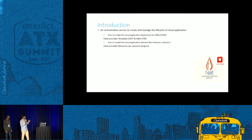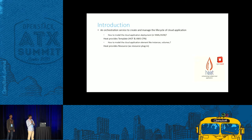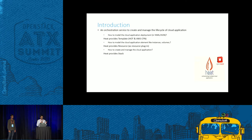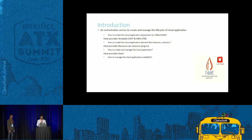If you take a cloud application, it's made of different resources. To model each resource, we have a resource plugin. Once you model the cloud application as a template, you can create as many cloud applications from it by means of a stack. Once you deploy the stack, when the load goes up or down, you want to scale up or scale down — that's where it gives auto scaling.